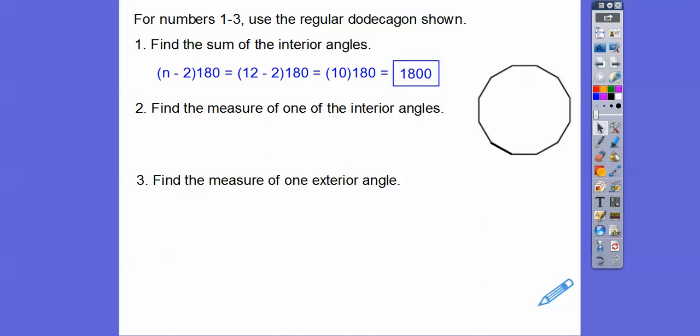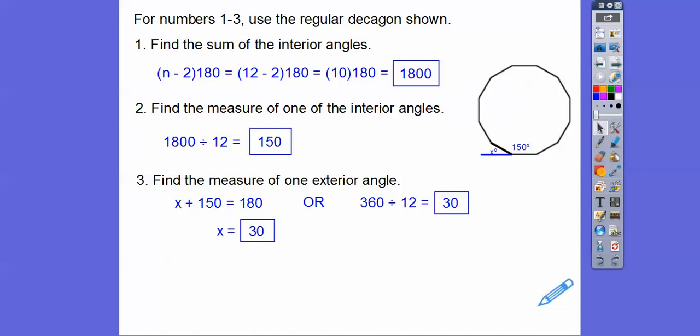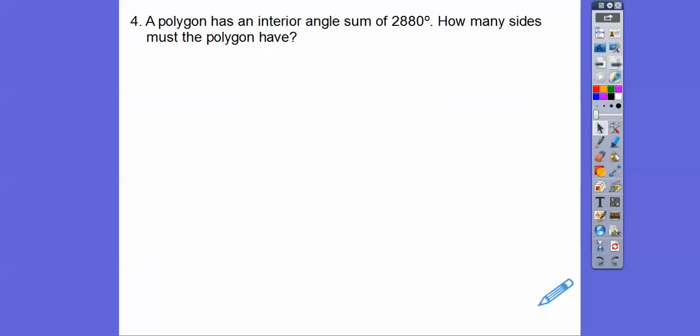Since it's regular, all the sides and all the angles are equal. So if all these equal angles add up to 1800, then we take 1800 and divide that by 12, which gives us 150. Find the measure of one exterior angle. Well, an exterior angle forms a straight line with the interior angle of 150. Straight lines add up to 180, so we subtract to get 30. Or all exterior angles add up to 360, so 360 divided by 12 also gives us 30.